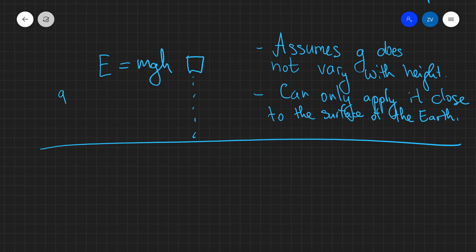But remember, g is actually minus Gm over r squared. So g does vary with the distance to the gravitational center of the planet. So we can actually only apply this equation very close to the surface of the earth.